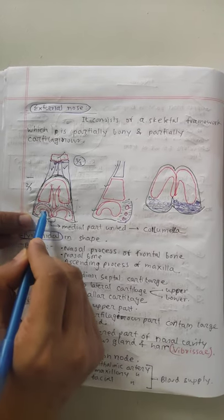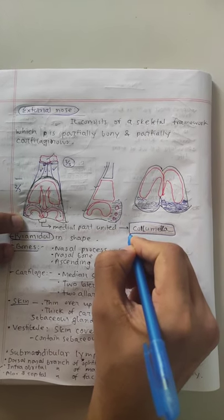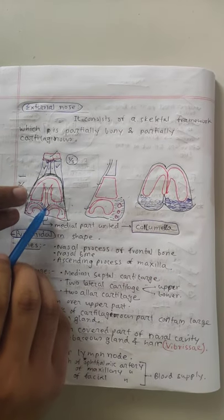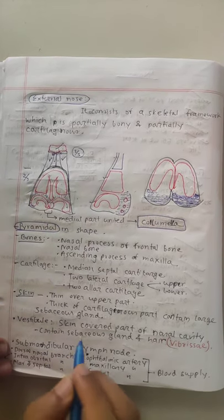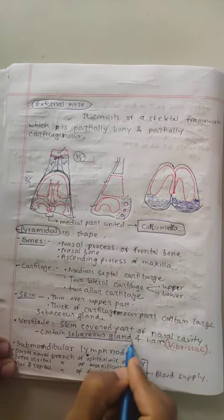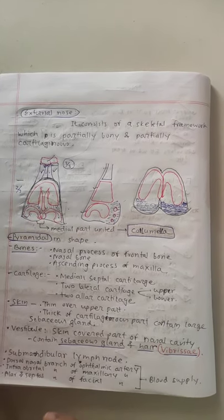This is the alar cartilage. This is the columella. The lower part is thick skin. This has glands, specifically the sebaceous glands. There are hair follicles as well. This is the blood supply.